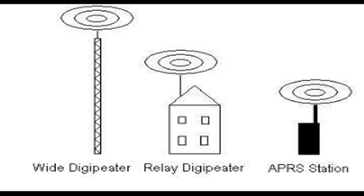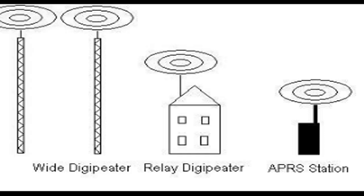Just as iGates are sparse, so are wide digipeaters. Wide stations are used to send data over greater distances, like across cities or across the state, and are normally considered the most powerful type of APRS station. Too many wide digipeaters in a small area can create a lot of unneeded chatter on the radio, so check with hams in your area before setting up one of these stations as well.